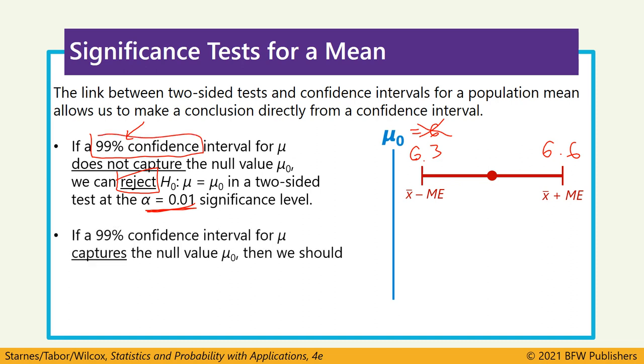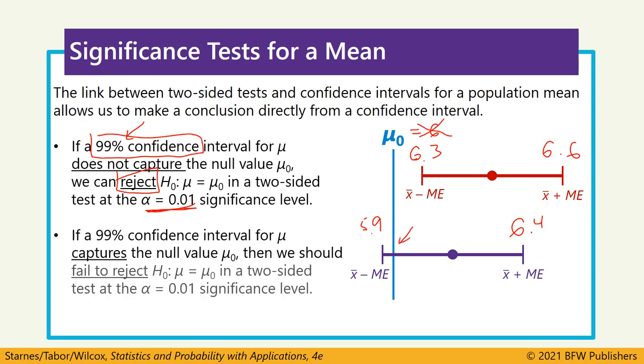If we made the confidence interval and we found that that 6 was in that range, let's say maybe it went from 5.9 to 6.4, 6 is within that range, then we would fail to reject based on that 1% significance level.